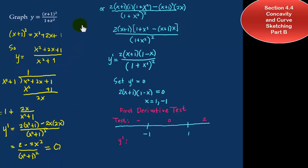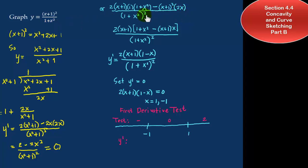Suppose we didn't do all this long division — you can find the first derivative right from the beginning using the quotient rule. Square the bottom, then take the derivative of the top, which is 2 times x plus 1, then the derivative of x plus 1 is 1, multiplied by the bottom, minus whatever is on top, multiplied by the derivative of the denominator, which is 2x. After doing the algebra, we see that x plus 1 is a common factor in the numerator.